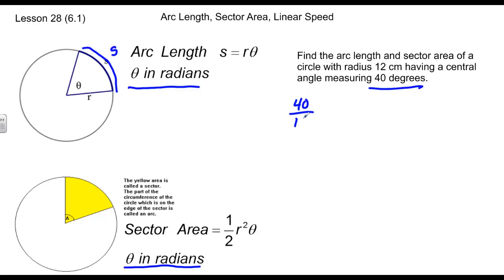We know 40 over 180 is equal to our radian value over pi. So we know that two-ninths pi is equal to our radian value for the angle.